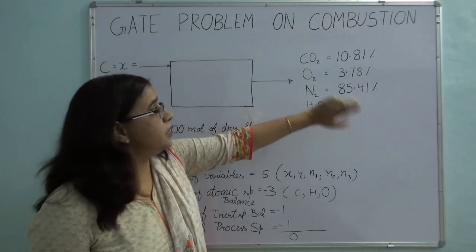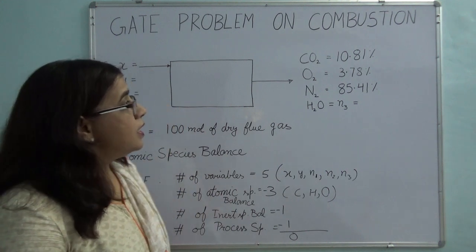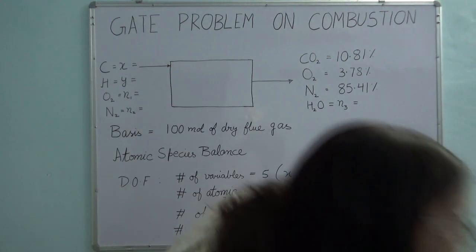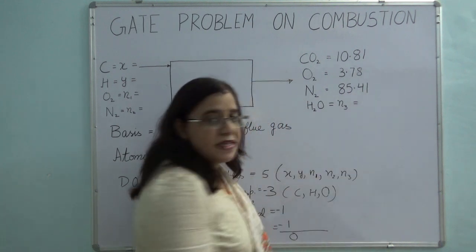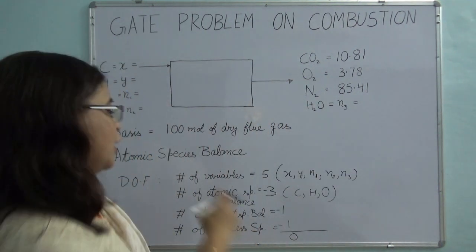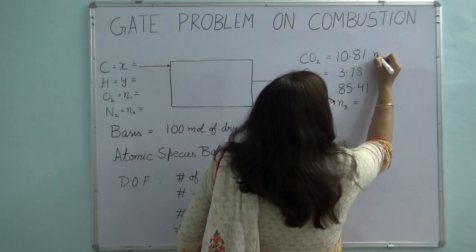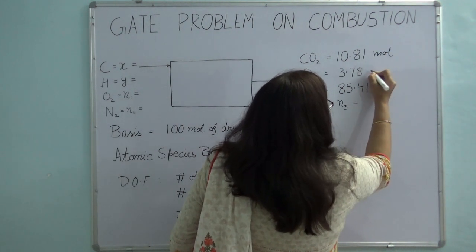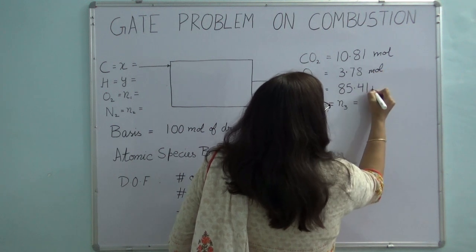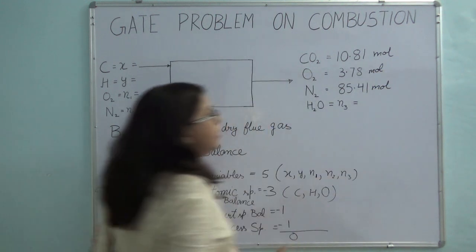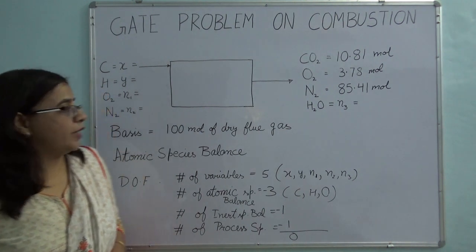The water part is not included. Since I am taking 100 moles of dry flue gas as my basis, I can directly convert percentages into moles: 10.81 moles of carbon dioxide, 3.78 moles of oxygen, and 85.41 moles of nitrogen.